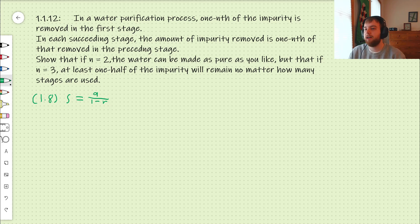In a water purification process, 1 nth of the impurity is removed in the first stage, and in each succeeding stage, the amount of the impurity removed is 1 nth of that removed in the preceding stage. Show that if n equals 2, the water can be made as pure as you like, but that if n equals 3, at least 1 half of the impurity will remain no matter how many stages are used.